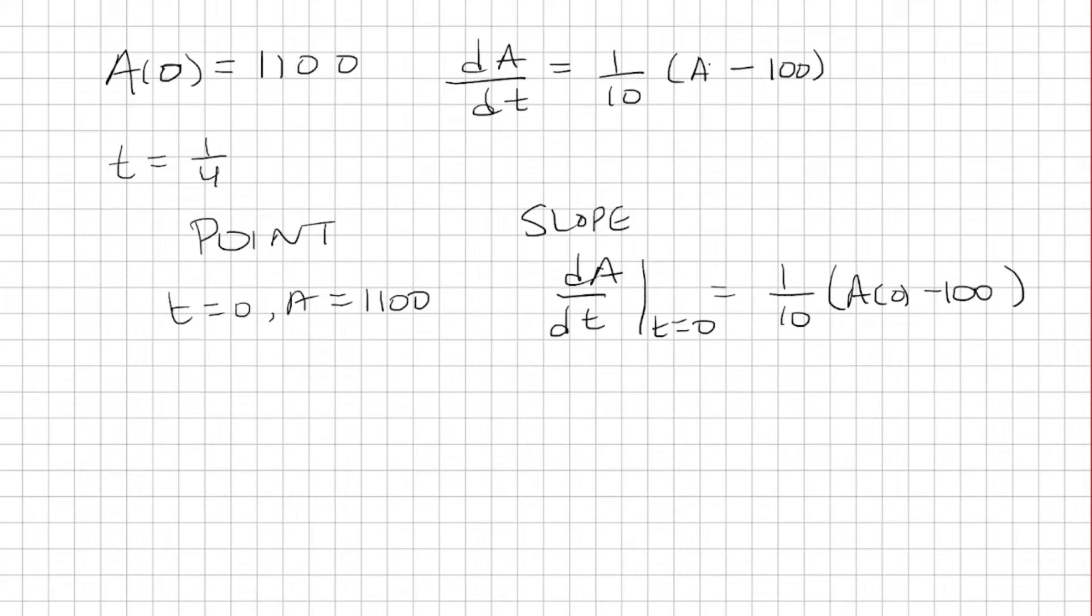Treat A as like your y and t as your x. What is A at t equals 0? A at t equals 0 is 1,100. So we're going to replace A sub zero, A of zero with 1,100. Subtract 100. That's going to be 1,000 over 10 is going to be 100. So that's going to be my slope.